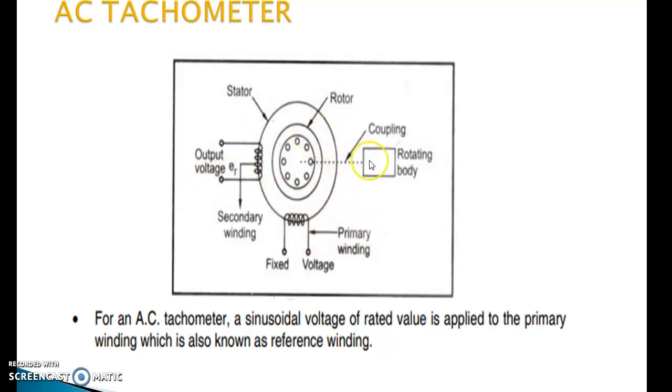This is primary winding and this is the secondary winding. For an AC tachometer, a sinusoidal voltage of rated value is applied to primary winding which is known as reference winding.